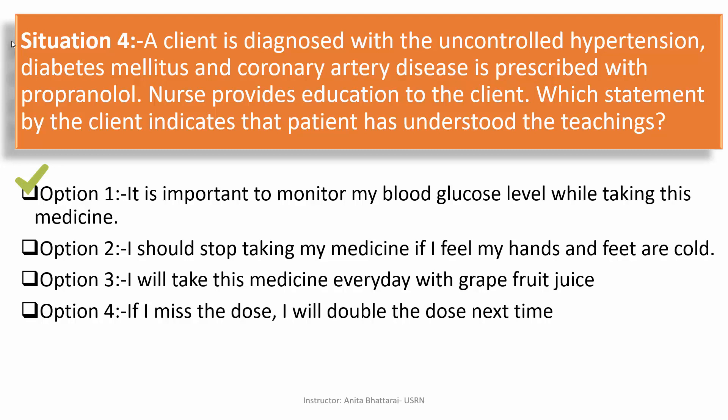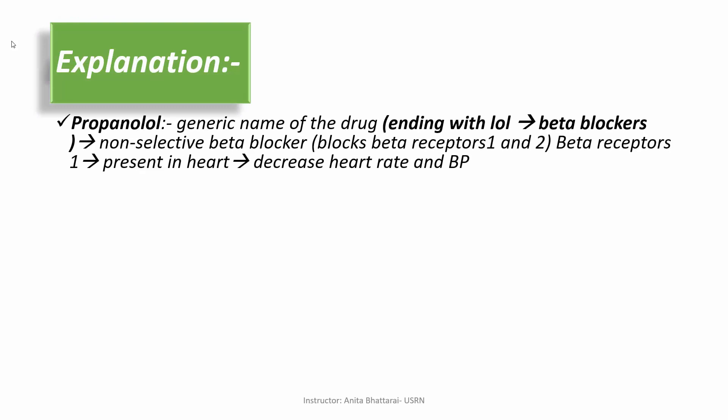The answer is option one. The drug given to the patient is propranolol — a generic name ending in 'lol', which identifies it as a beta blocker. There are several forms of beta blockers: beta-1 blockers, beta-2 blockers, or non-selective. Propranolol is a non-selective beta blocker, meaning it blocks both beta-1 and beta-2 receptors. Beta-1 receptors are especially present in the heart, while beta-2 receptors are present in different muscles, especially in the liver and kidney.